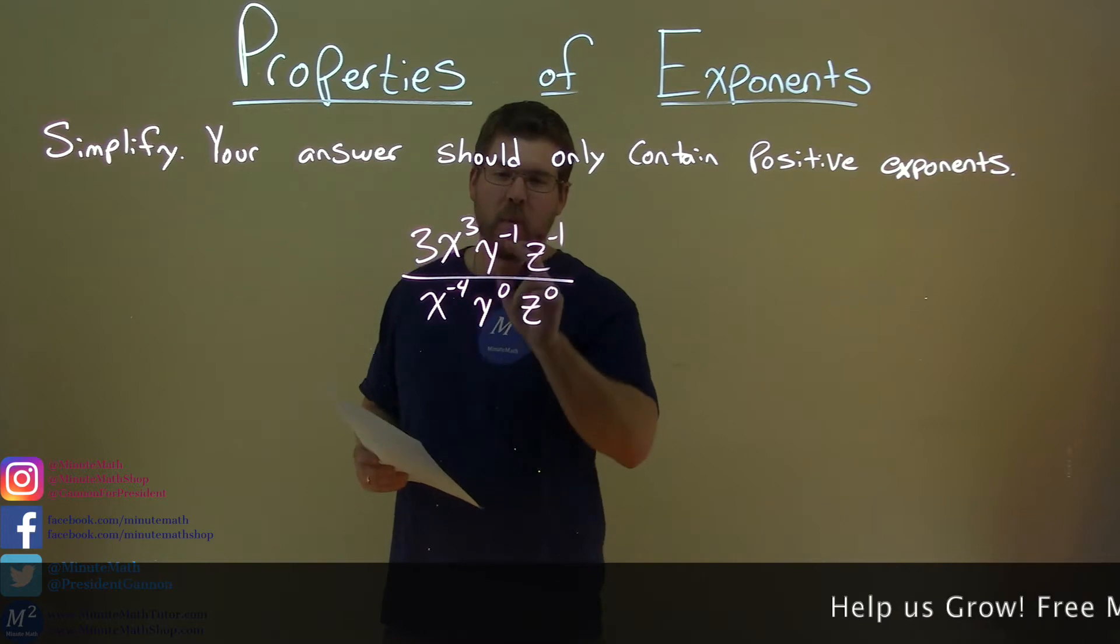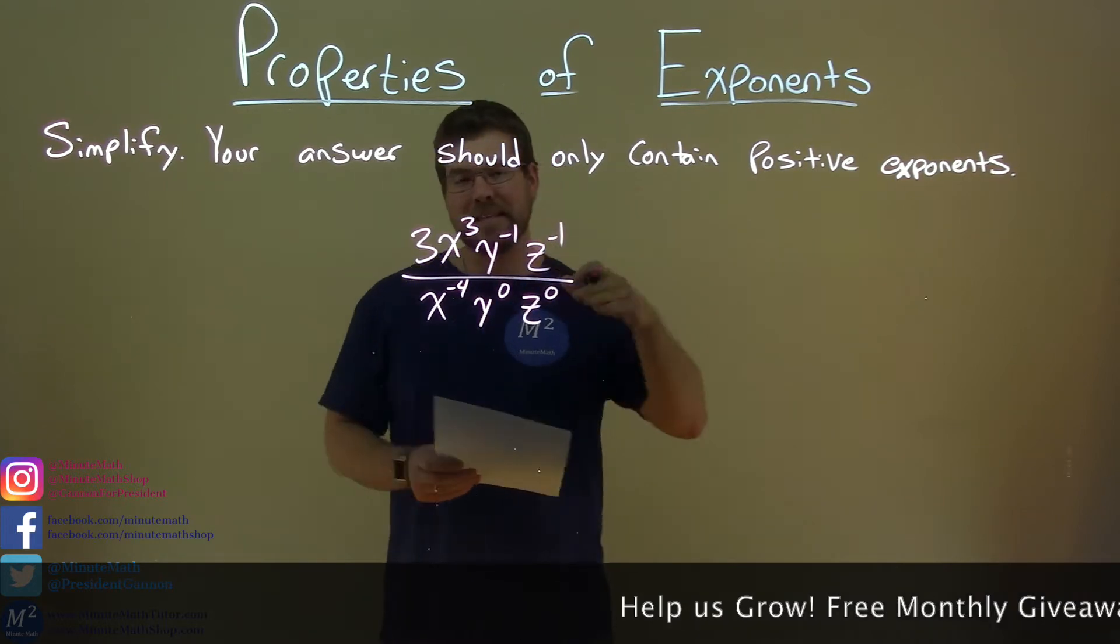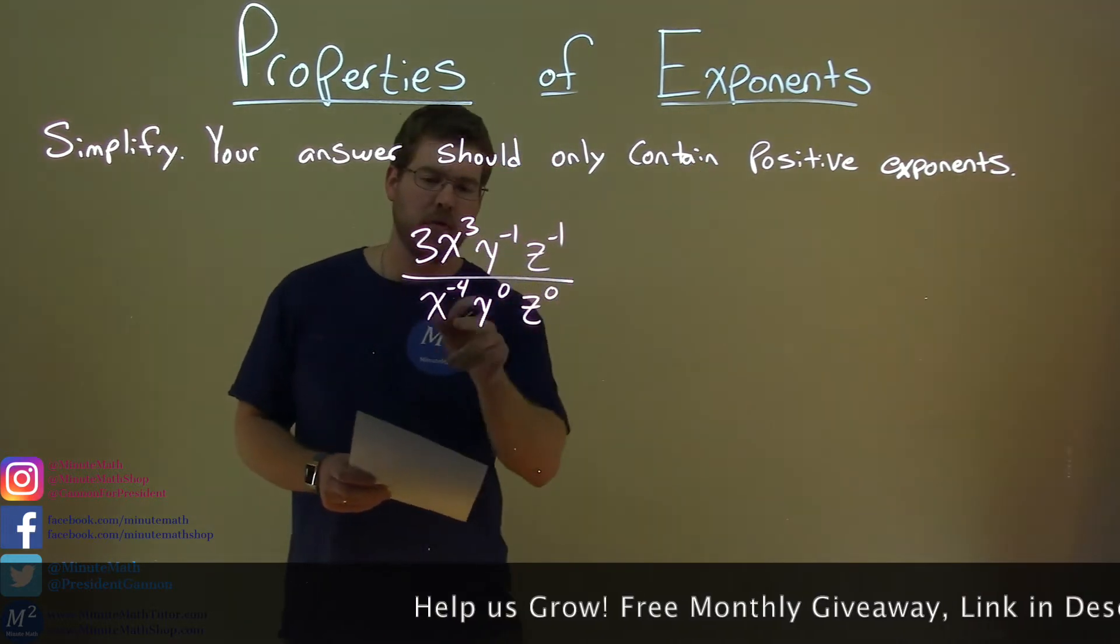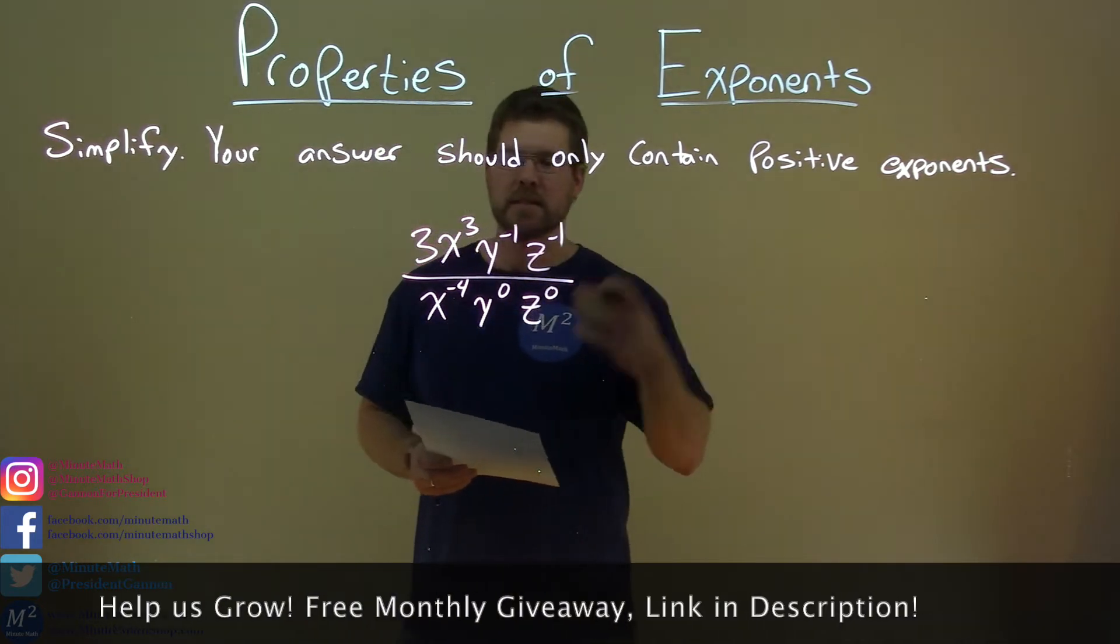So, 3x to the third, y to the negative 1, z to the negative 1 power, all over x to the negative 4, y to the 0, and z to the 0.